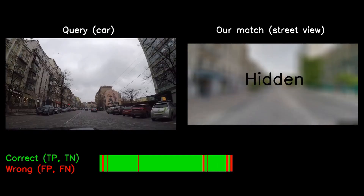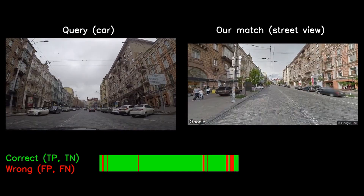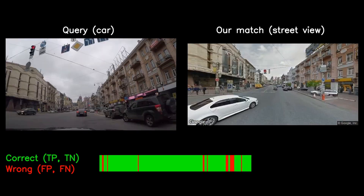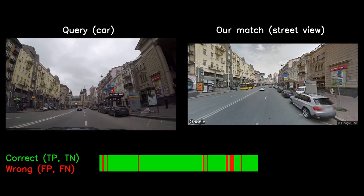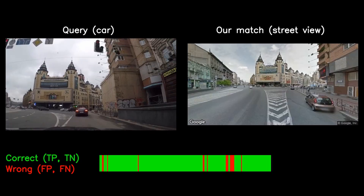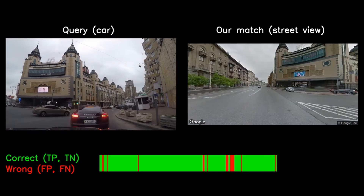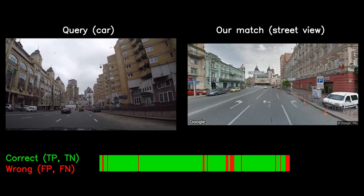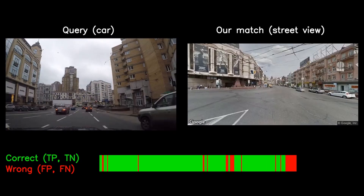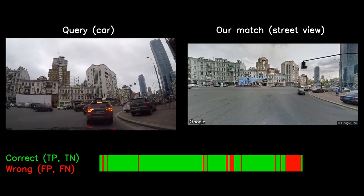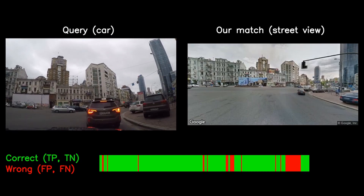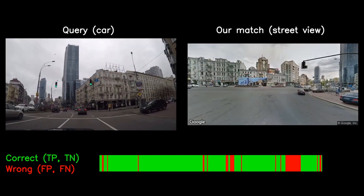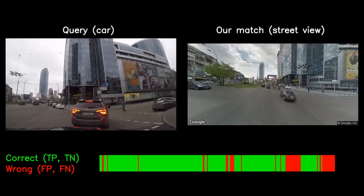Moreover, the frame rate of Google Street View is irregular, which leads to several continuous query images being matched to the same image in Google Street View. Nevertheless, our approach finds most of the matches by considering the sequentiality of the images.